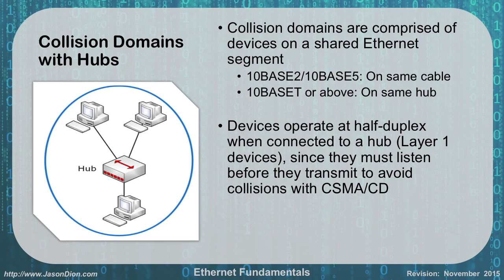Half duplex means you can talk or you can listen — you can't do both. Think of a walkie-talkie: that is half duplex. As opposed to your phone, which is full duplex, where you can talk and listen simultaneously. With full duplex, you can talk and listen at the same time. With half duplex, you can only do one or the other. When operating on a hub, you're at half duplex, which also means you're effectively at half the speed, because you can only do one or the other, not both.